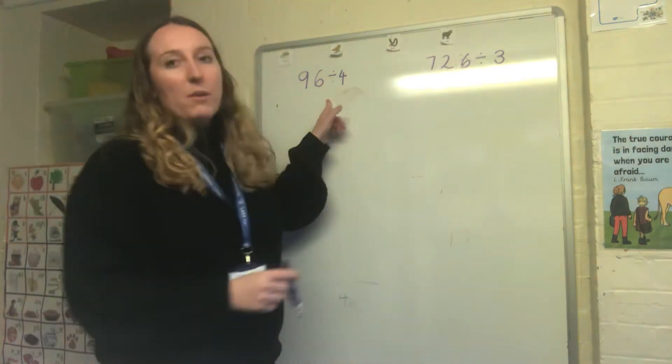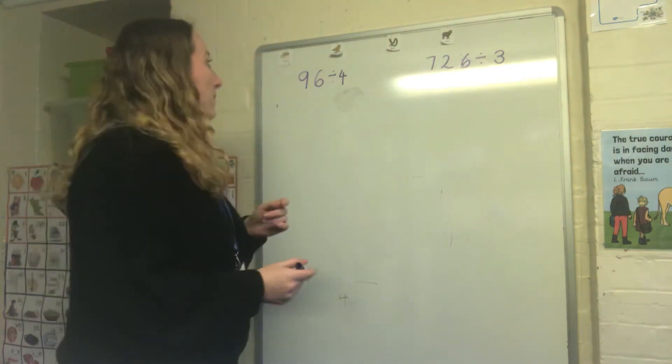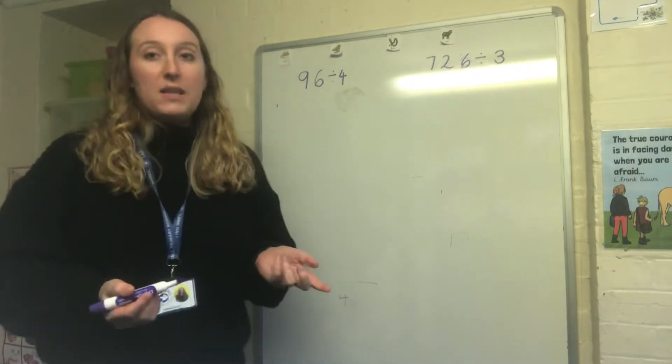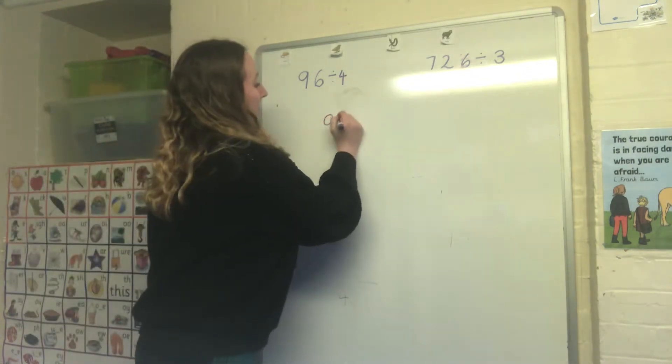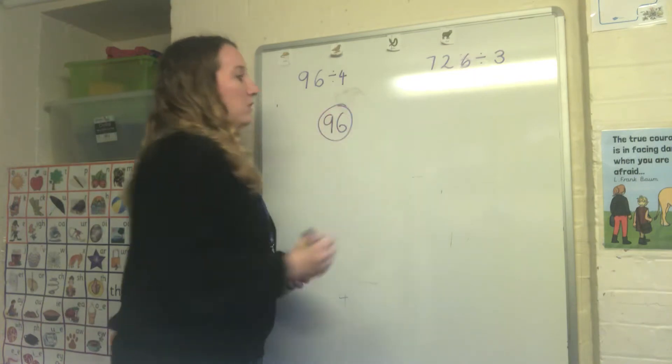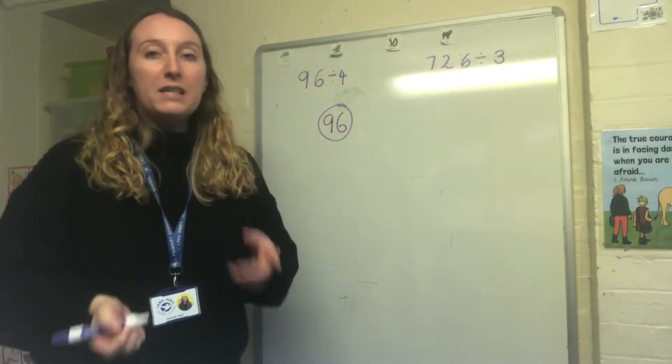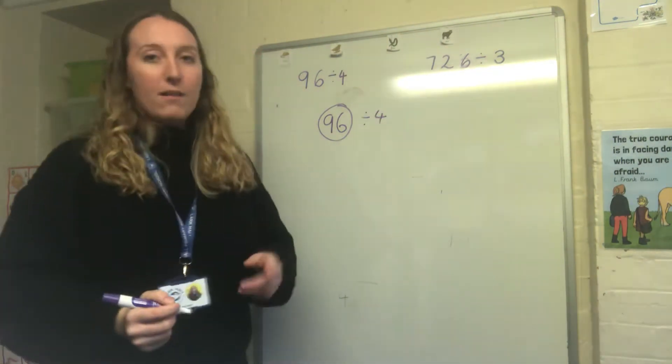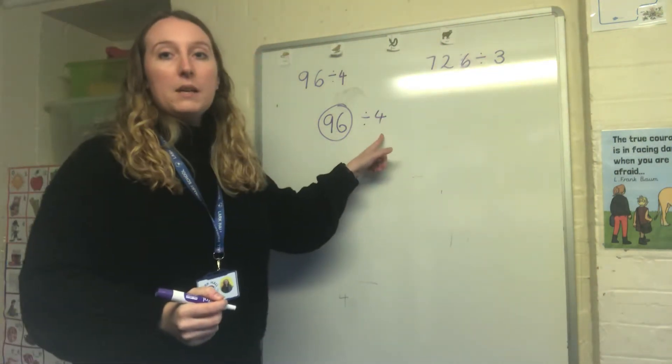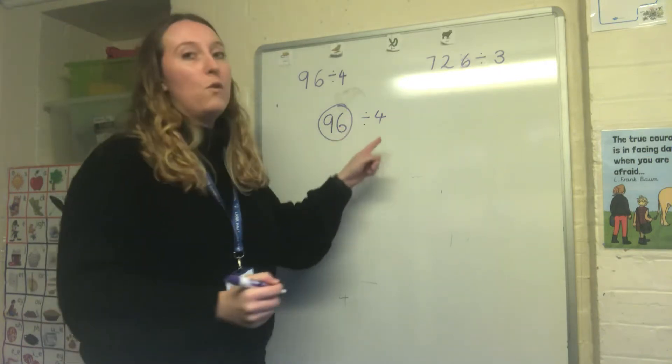So the first question I'm going to look at is 96 divided by 4. When I'm doing this I use a part-whole method to help me partition. So 96 is my whole and I need to split it into parts. It's really important that I pick parts that are easily divided by the number I'm dividing by. So in this case I'm dividing by 4.